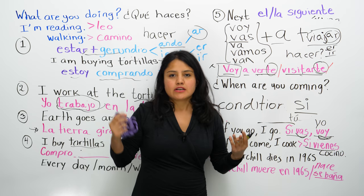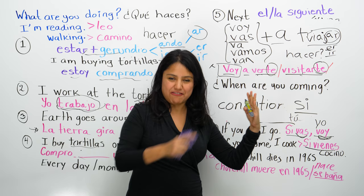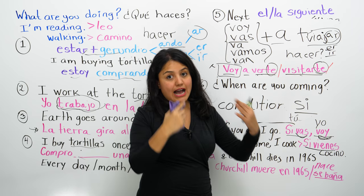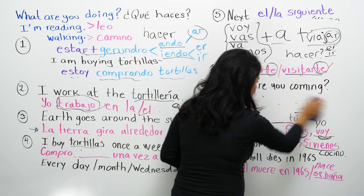The conditional present formula is very handy: si + present indicativo simple, comma, present again. For example: si vas, voy. If you come, we go to the pool. It's practical because you only need to know the present tense — no complicated subjunctive or conditional needed for this structure. Very useful, and I think you'll learn it well.